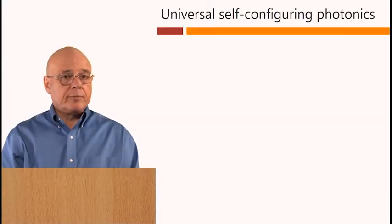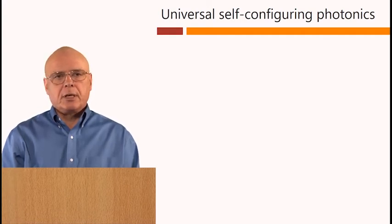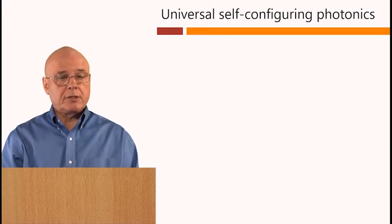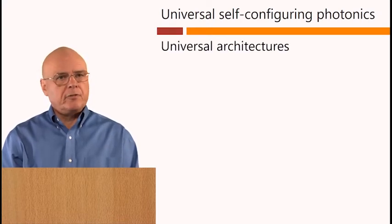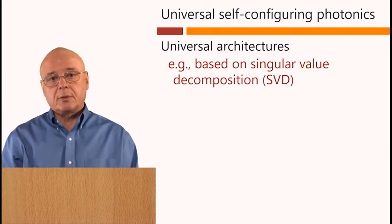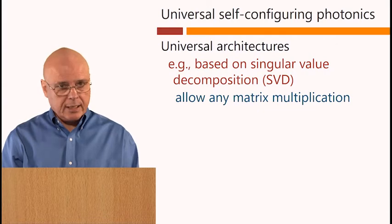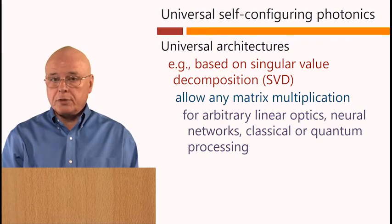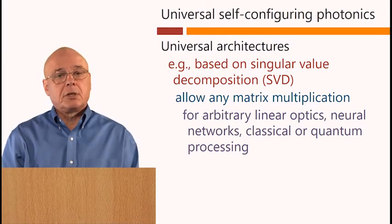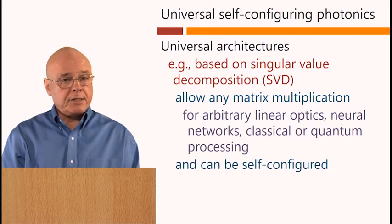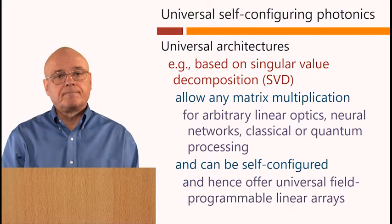So far, we've talked about some specific potential applications, but another important point about these meshes is they can be quite universal as well as self-configuring. Universal architectures, for example, based on concepts like singular value decomposition, allow any matrix multiplication. So for arbitrary linear optics, for neural networks, and neural networks have used these architectures, and for classical or quantum processing. And as I said, these networks can also be self-configured while still being universal. And hence, they offer universal field programmable linear arrays.